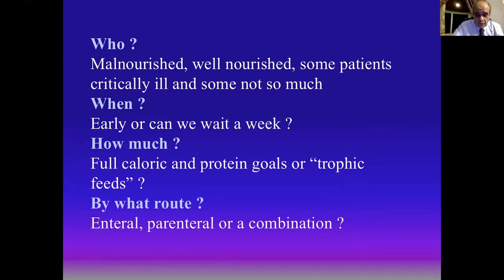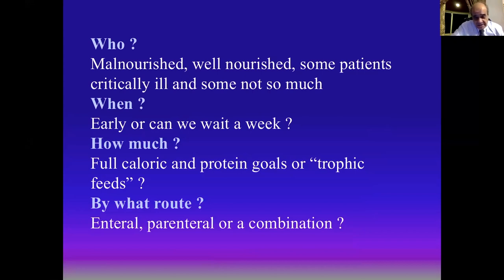For nutrition support recommendations in the ICU, we must ask: is this patient malnourished, well-nourished, or in need of urgent feeding support? When do we start early feeding or wait one week — especially in well-nourished patients? How many calories do we start with — gradually or at full caloric and protein goals, or do we prefer trophic feeds? By what route — enteral, parenteral, or a combination?